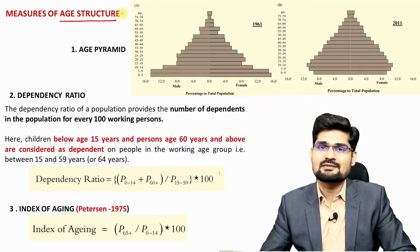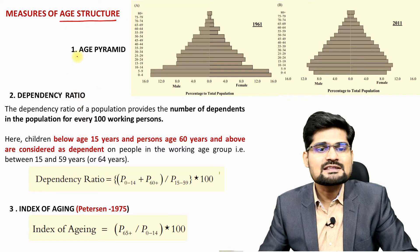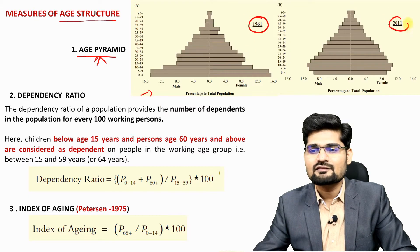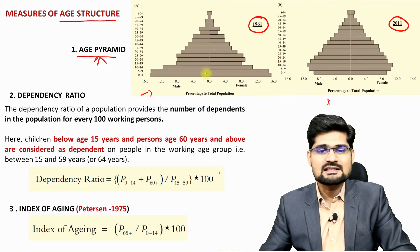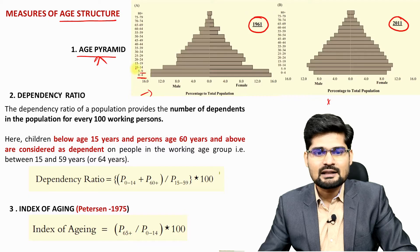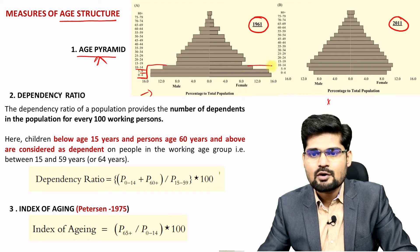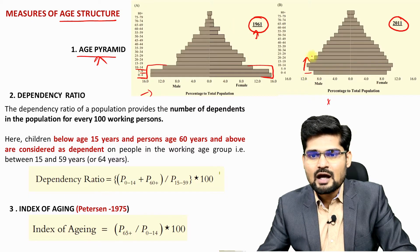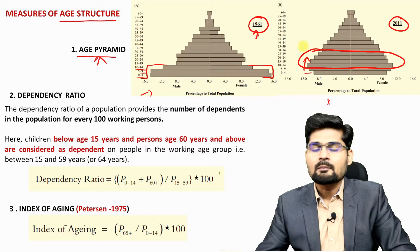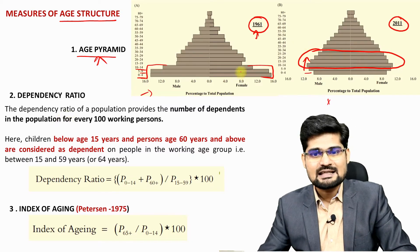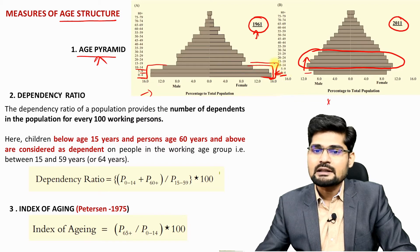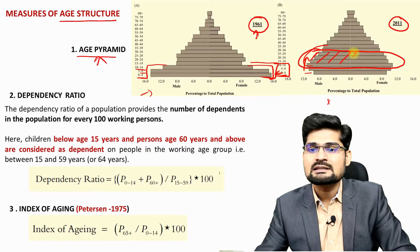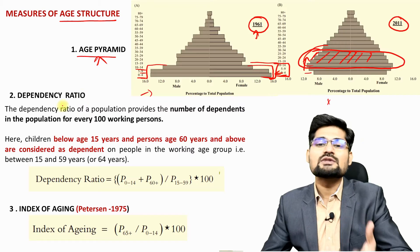There are various ways to measure age structure. One simple way is the age pyramid. Observing India's pyramids from the 1961 and 2011 census, the 1961 data shows a broad base at younger age groups like 0-4, 5-9, 10-14. By 2011, the broad base has shifted upward, meaning the youth population now has the major share in the entire age structure, indicating greater potential.